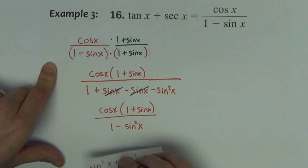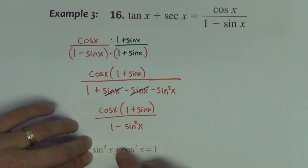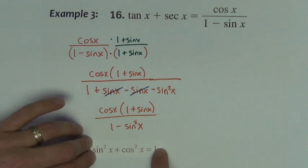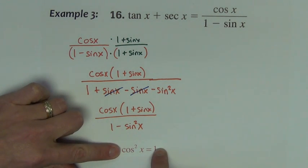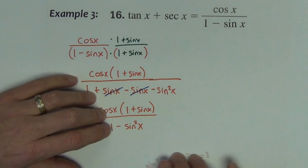So we now have cosine x times the quantity 1 plus sine x divided by 1 minus sine squared. Now we've got an opportunity next to use an identity, a Pythagorean identity, and I use Pythagorean identities a lot when I see trig functions that are squared. If I were to take this sine squared term and subtract it over to this side of the equal sign, what would be left is cosine squared equals 1 minus sine squared. So my denominator, 1 minus sine squared, is the same as cosine squared.